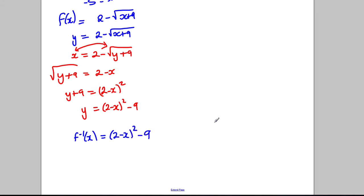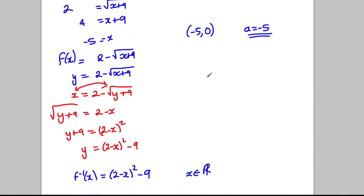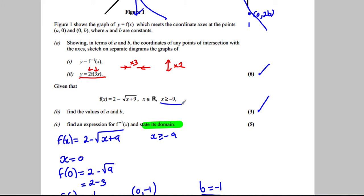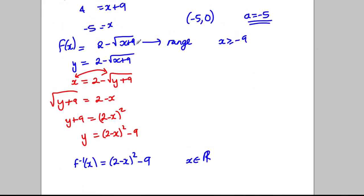Now for the domain of the inverse: we need the range of the original function. For the original function, with x ≥ −9, the term (x + 9) is always non-negative, so √(x + 9) is always non-negative, and we're subtracting a non-negative number from 2. So the output is always less than or equal to 2 (equality when x = −9). Therefore the range of the original is y ≤ 2, and so the domain of the inverse function is x ≤ 2.